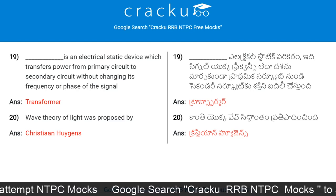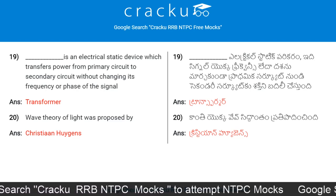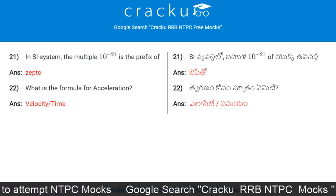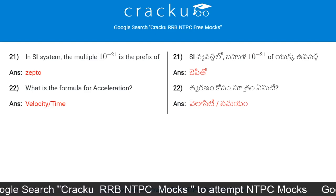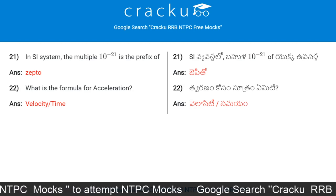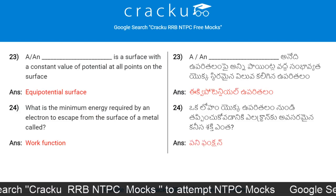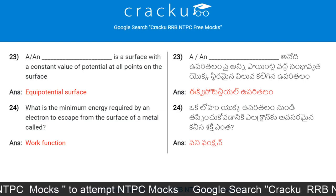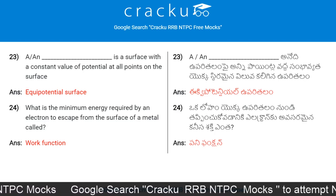Wave theory of light was proposed by Christian Huygens. In the SI system, the multiple 10⁻²¹ is the prefix zepto. What is the formula for acceleration? Velocity divided by time. A surface with a constant value of potential at all points on the surface is called an equipotential surface.